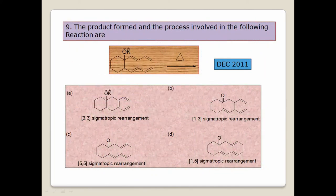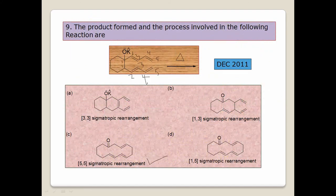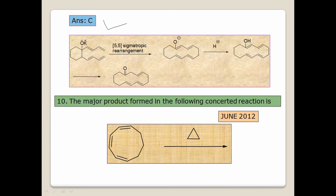Next question: view the numbering — 1, 2, 3, 4, 5 on one side and 1, 2, 3, 4, 5 on the other — this is a 5,5-sigmatropic rearrangement. After the product forms, a single bond forms here, the double bond migrates to C, and with O⁻ under neutral conditions, the enol converts to the keto form. The correct answer is C. The possible answer is a 5,5-sigmatropic shift — the remaining options (3,3; 1,3; 1,5) are eliminated.